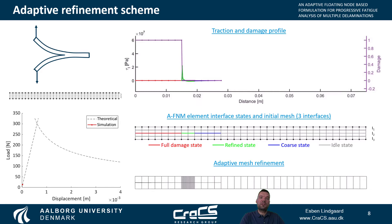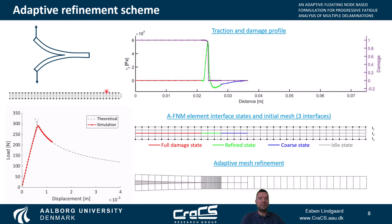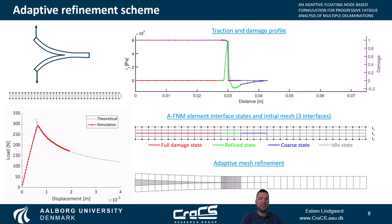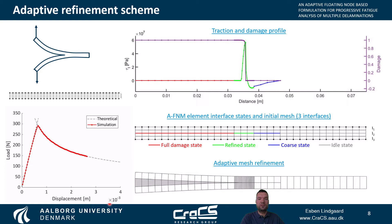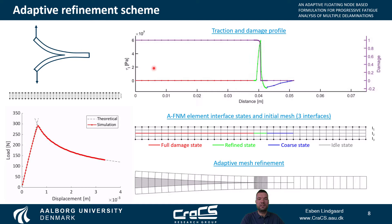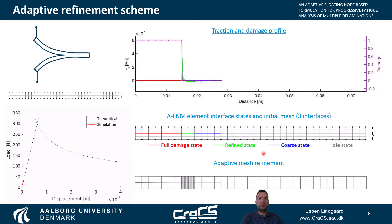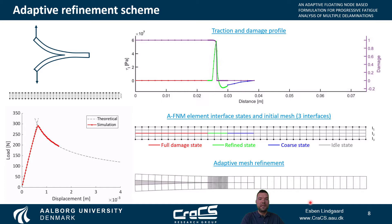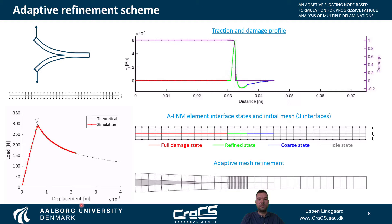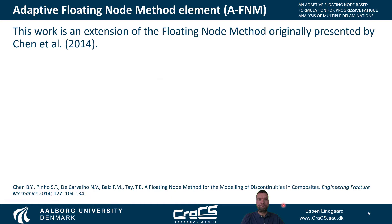Let us now study how the adaptive refinement scheme automatically updates during a nonlinear solution. We consider a quasi-static DCB mode 1 case with an initial coarse mesh with a single adaptive floating node element in the thickness direction. The model has three interfaces, but only the interface in the middle is delamination. Shown here are the structure response curve compared to the analytical solution, the traction and damage profile of the middle interface, the current adaptive floating node element interface states for all three interfaces, and the resulting mesh refinement as the crack propagates. As can be seen, the adaptive formulation produces the correct solution compared to the analytical solution, and does so with a relatively coarse mesh.